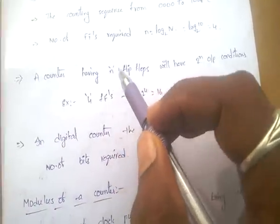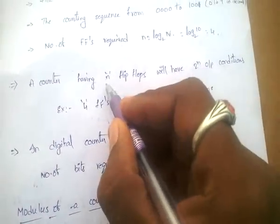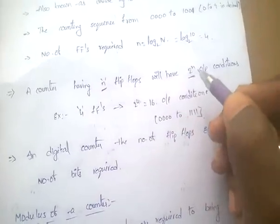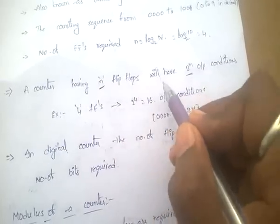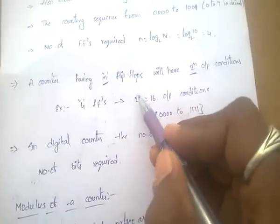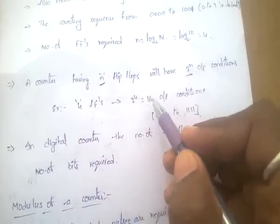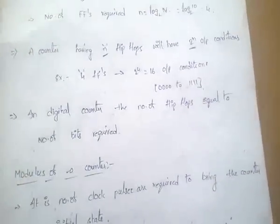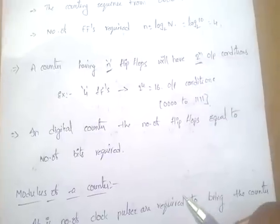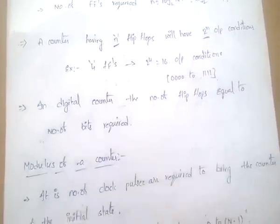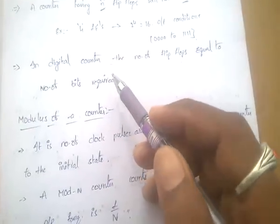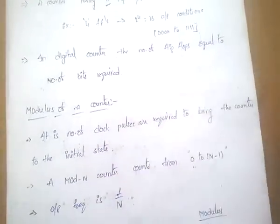Important: a counter having n flip-flops will have 2^n output conditions. For example, a counter with 4 flip-flops has 2^4 = 16 output conditions. In a digital counter, the number of flip-flops equals the number of bits required.